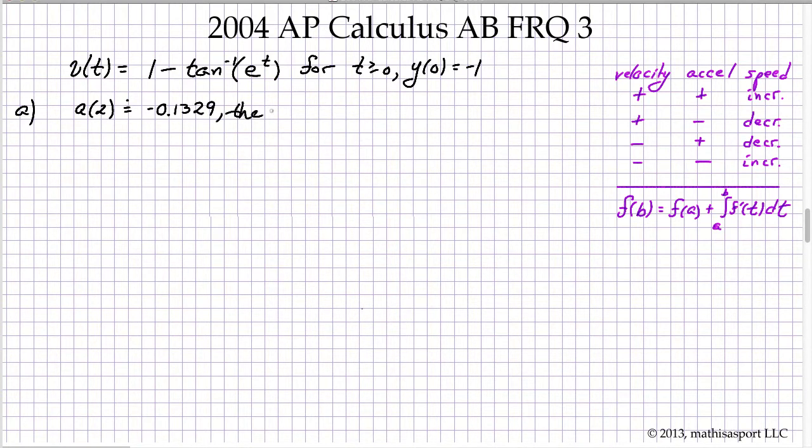We get negative 0.1329. And I'll just write a little explanation: the slope of the tangent line to the velocity curve at t equals 2. And in parentheses I'll just say that I evaluated it numerically.